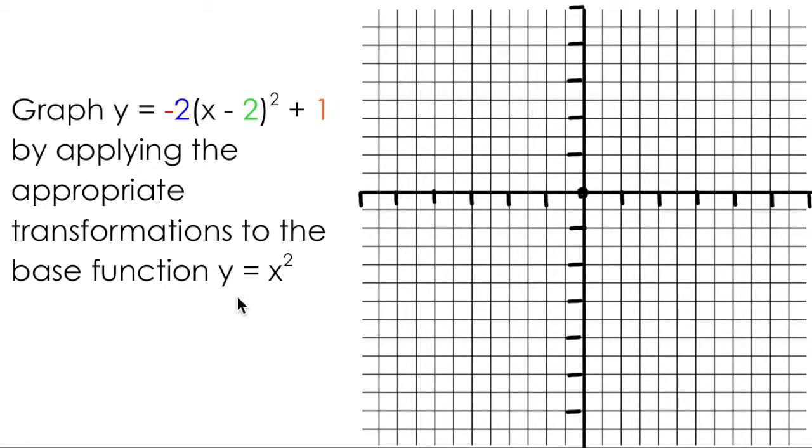Recall that the base function y equals x squared can be graphed by subbing in x values. If I sub in 0 and square it, I get 0. I can plot that point right here. If I sub in 1 and square it, I get 1. I can plot that point here. Substituting x equals 2, I get 4, and I'm going to sub in negative 1 and negative 2 to produce these points here. I can connect these five points with a nice smooth curve to produce the graph of the base function y equals x squared.